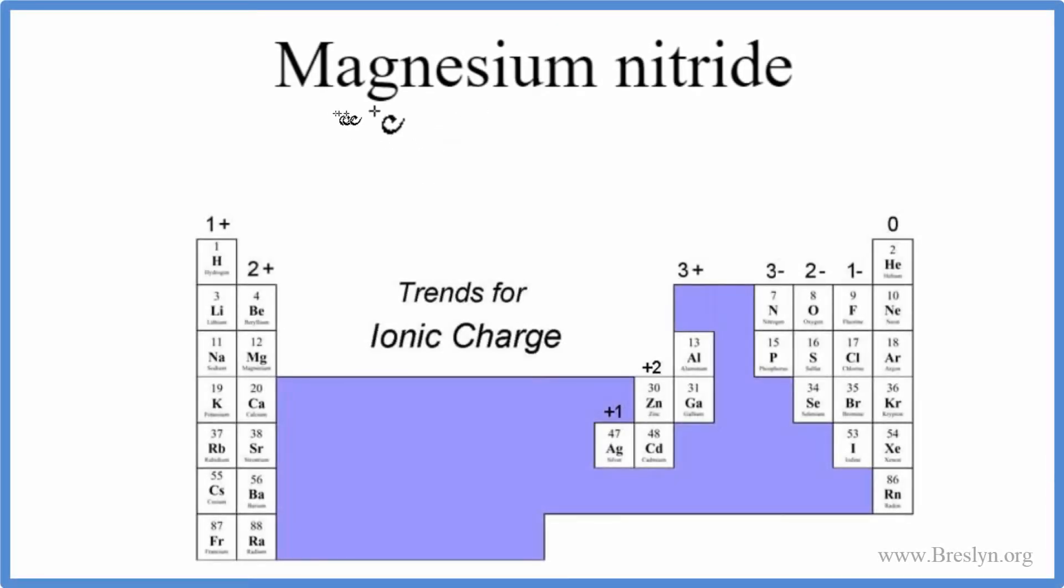In this video, we'll write the formula for magnesium nitride. So we have magnesium, that's a metal, and then nitrogen here on this side, that's a non-metal. This is an ionic compound, so we have to worry about charges when we write the formula.